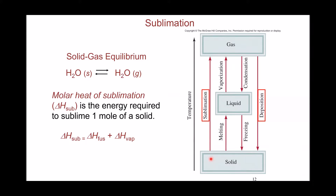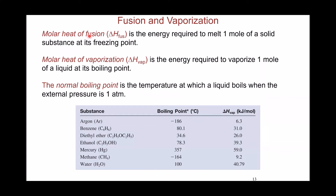Moving from solid to gas in one step — sublimation — equals the sum of melting then evaporation. So the heat needed for sublimation is simply the sum of the heats for melting and vaporization. The molar heat of fusion is the heat needed to melt one mole of solid to liquid, and the molar heat of vaporization is the heat needed to vaporize one mole of liquid to gas at the boiling point. The normal boiling or melting point is the temperature at which the liquid boils at one atmosphere external pressure.